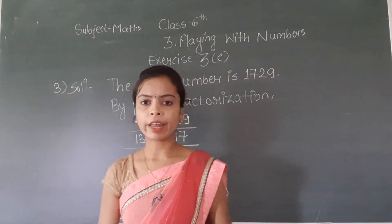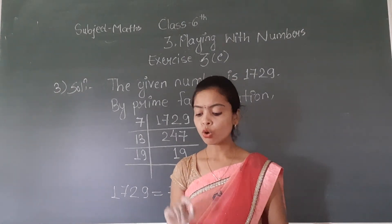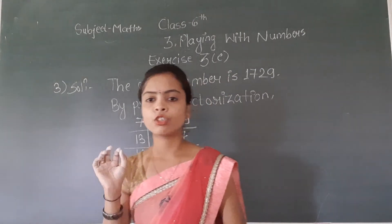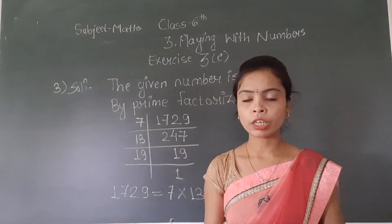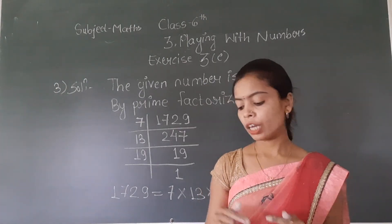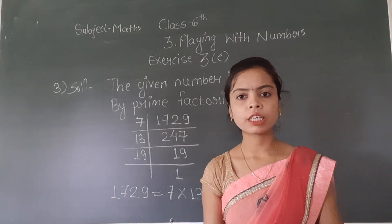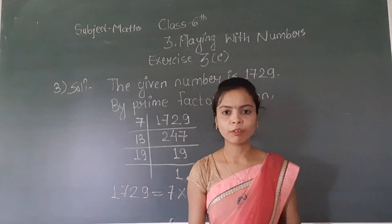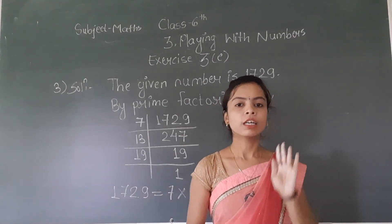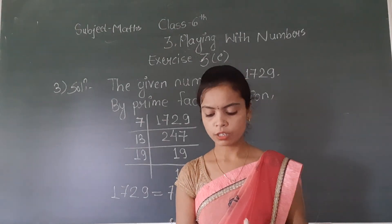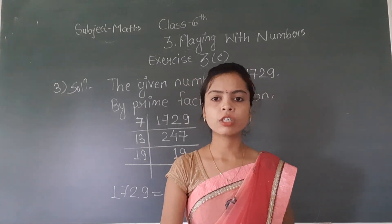With this we have completed exercise 3E. All the complete questions of exercise 3E are based on prime factorization and you have to do all 12 questions. Question number 1 ke sare 12 questions aap karein because when you are doing all the questions you are practicing prime factorization. If there is any doubt you can ask me. Exercise 3E is completed. The next topic, which is common factors, we are taking in our next lecture. Till then, bye, take care.